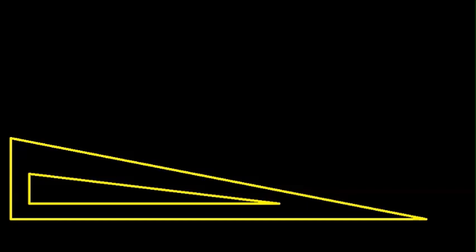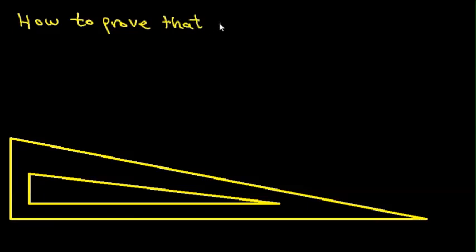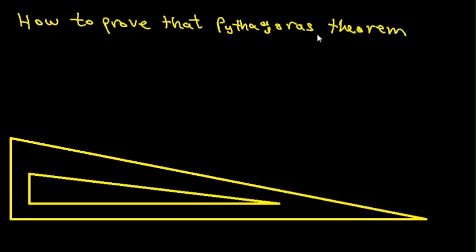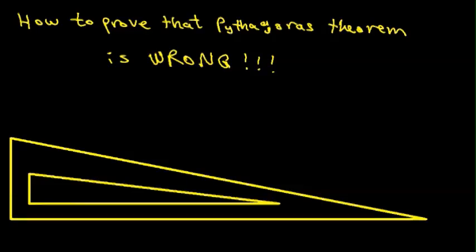Hi. I came up many years ago with a proof that there is something wrong with Pythagoras' Theorem. I asked my teachers, professors in college and grad school, and all the people I knew if there was anything wrong with my approach, but couldn't get any real answer from anyone. I recently tried the internet and found web pages that had hundreds of proofs, literally hundreds, because almost every great mathematician in history came up with a different one.